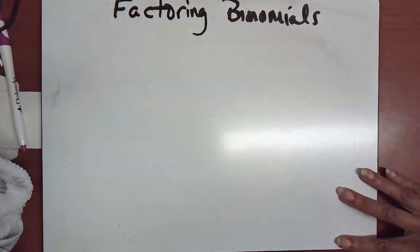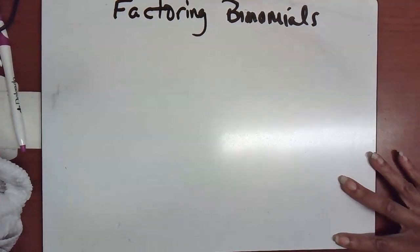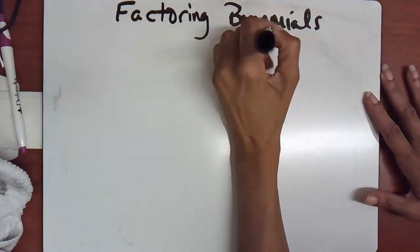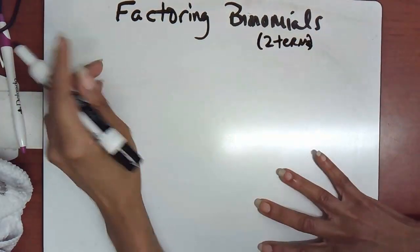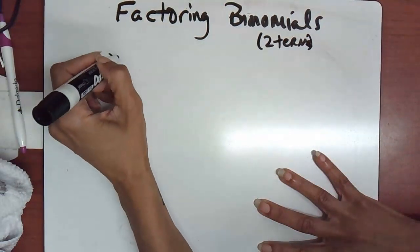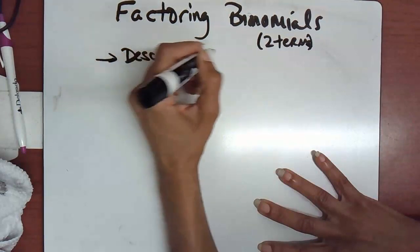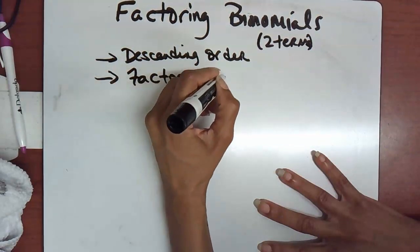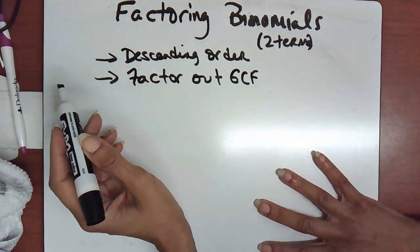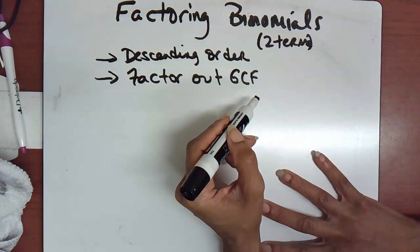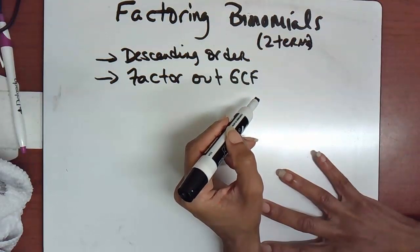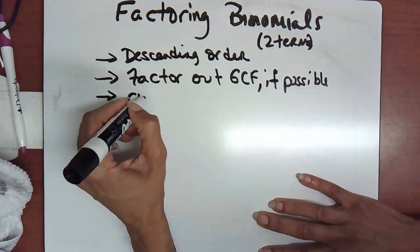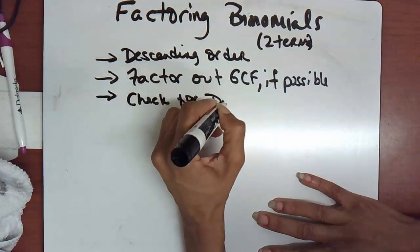Let's go over factoring binomials. We've already factored by grouping, which is four terms, and factored trinomials, which is three terms. Now we just need to touch on factoring binomials, which is two terms. When trying to factor a binomial, always make sure it's in descending order, then factor out a greatest common factor if one exists. The third step is to check if we're looking at the difference of squares.